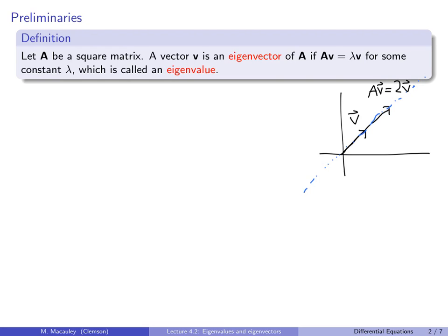The scaling factor — which is 2 in this picture — could be positive or greater than 1, it could be less than 1 (a shrinking factor), or it could be negative, which would send the vector in the opposite direction. Notice that if this vector gets stretched by a factor of 2, so does every vector on this line. So when searching for eigenvectors, if anything on this line is an eigenvector, the entire line is.